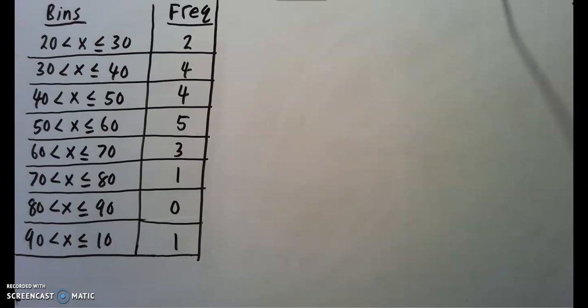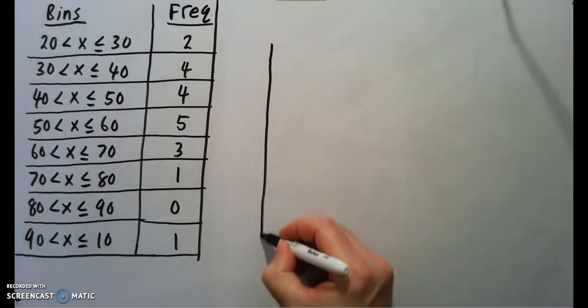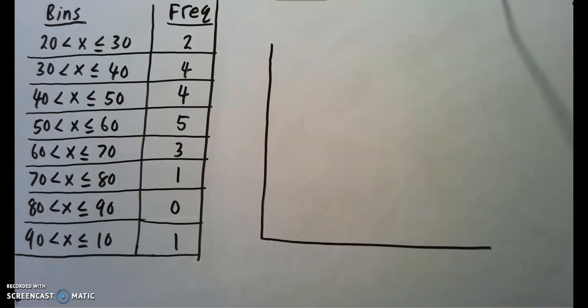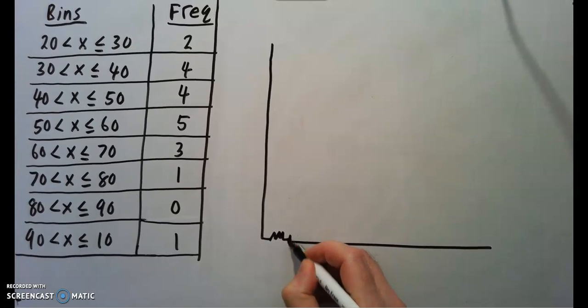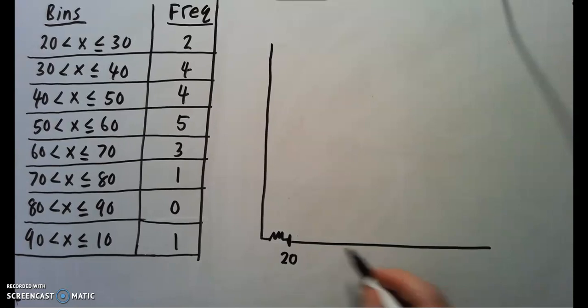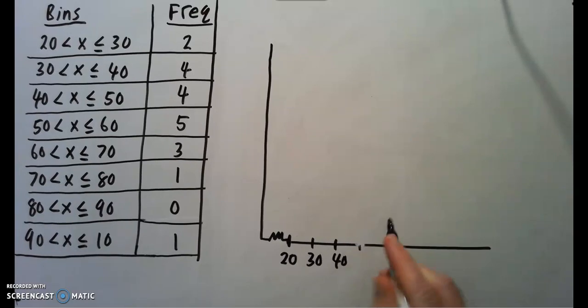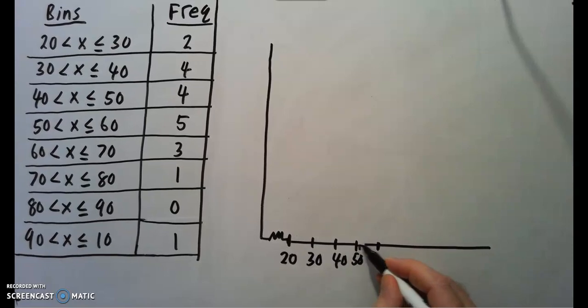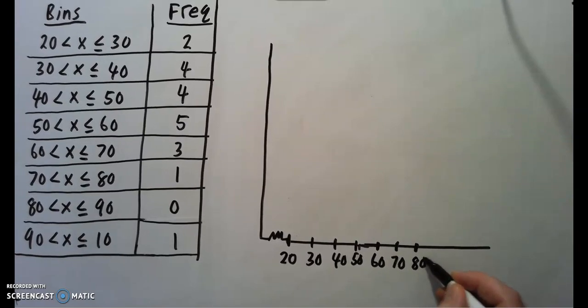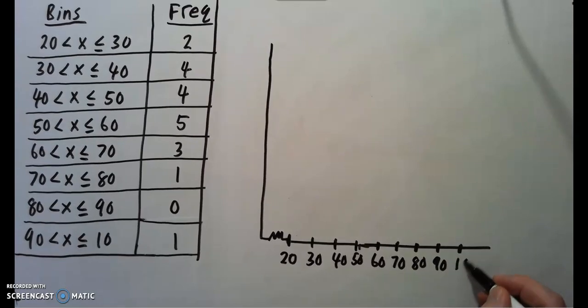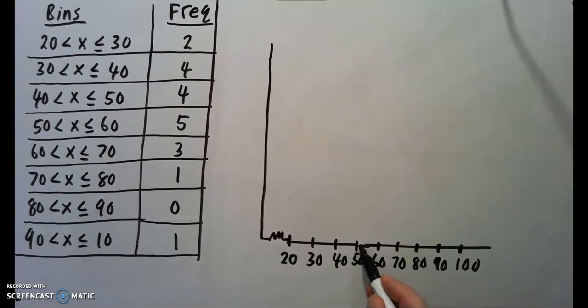So, here's our data. We have our bins and our frequencies. So let's do the histogram now. On the x-axis, we're going to be doing the bins. So, we're going to start with 20. I'm going to do a little squiggle here, saying that some value is missing. I'm going to say 20 starts here. I'm going to go by increments of 10. So, we'll say that's 30, 40, 50, 60, 70, 80, 90, 100. There's our bins I've graphed on the x-axis.